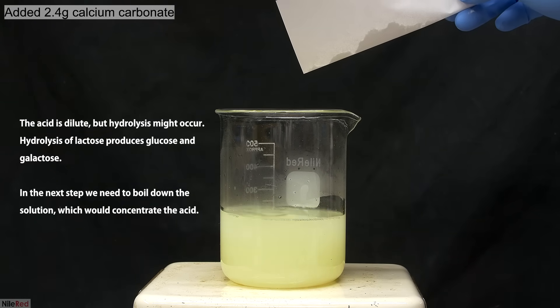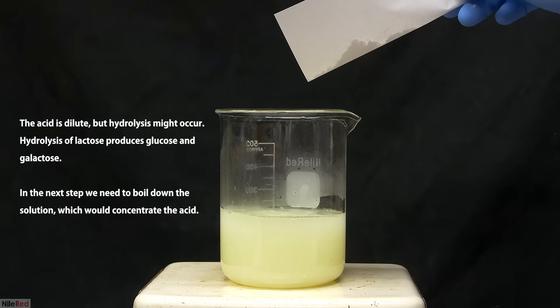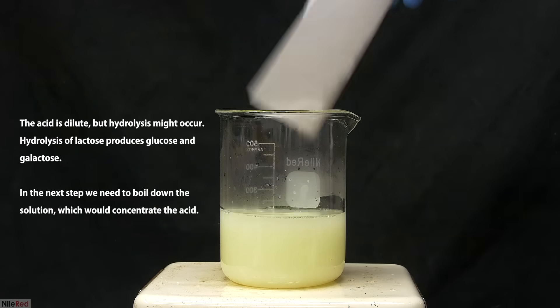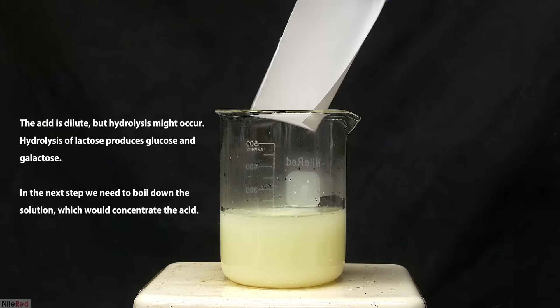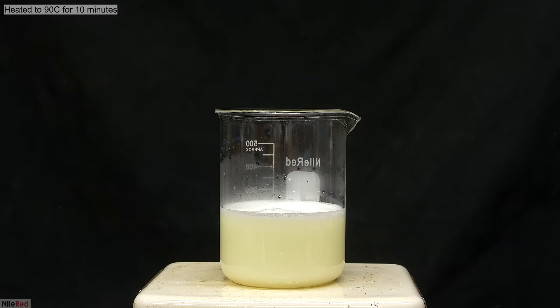Calcium carbonate is insoluble in water, so if it doesn't react here, it's pretty easy to filter off. With the calcium carbonate added and the stirring turned on, I crank up the heat. The goal now is to heat the solution to about 90 degrees Celsius, and to hold it there for 10 minutes.